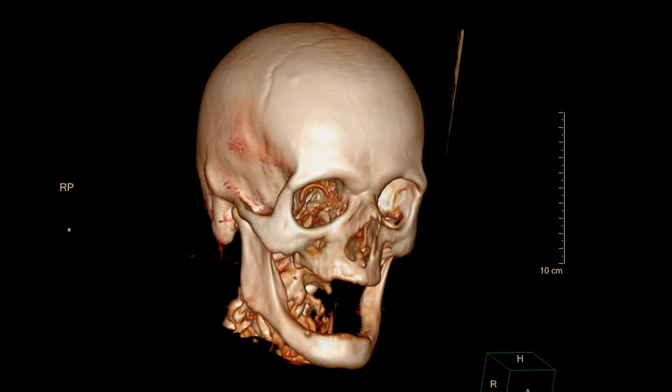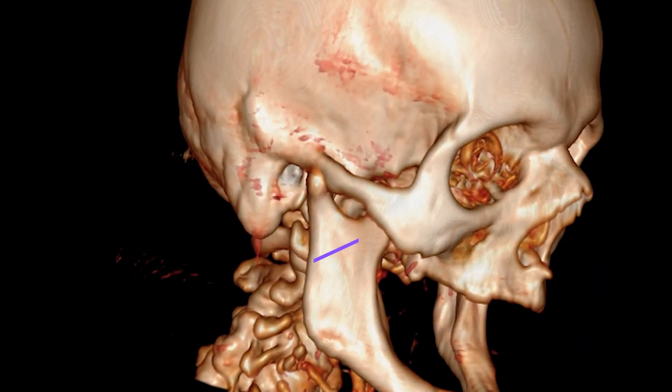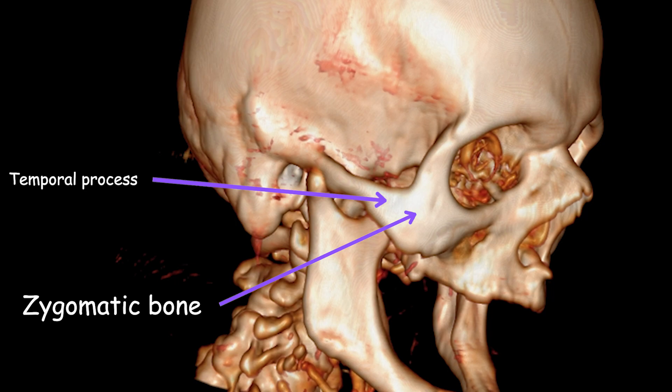The zygomatic bones are located at both sides of the face and consist of two parts. The temporal process of the zygomatic bone is a thicker and more robust projection that extends backward from the zygomatic bone, forming the anterior and inferior part of the zygomatic arch. The frontal process of the zygomatic bone, part of the cheekbone, extends superiorly and medially from the zygomatic bone, forming a bony projection towards the frontal bone.